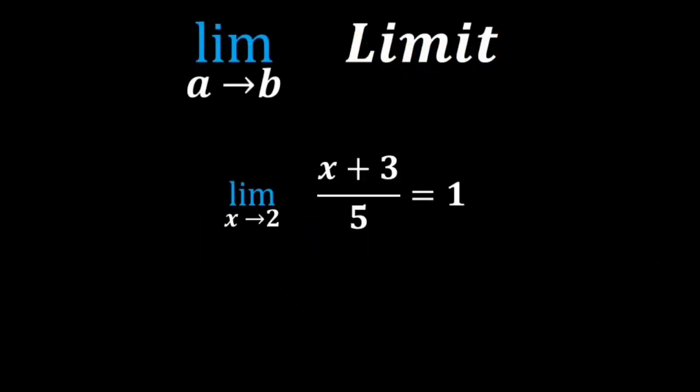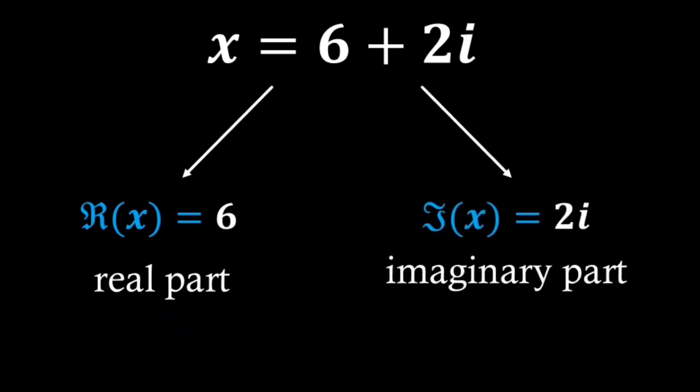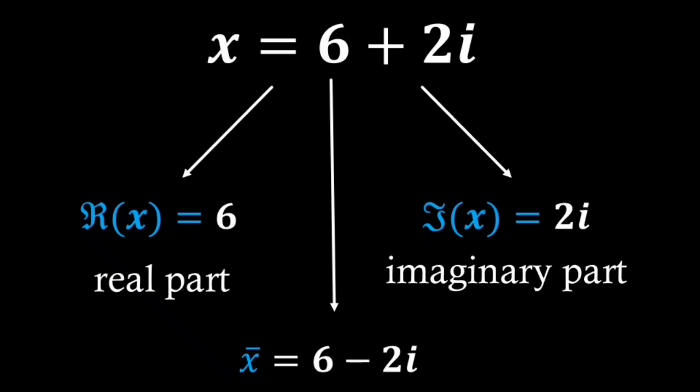Limit is used to denote the behavior of a function or an expression as its input approaches a certain value. The fancy R denotes the real part of a complex number. The fancy I denotes the imaginary part of a complex number. Using a bar above a complex number, we can denote the complex conjugate of that number, which just changes the sign of the imaginary part of the number.